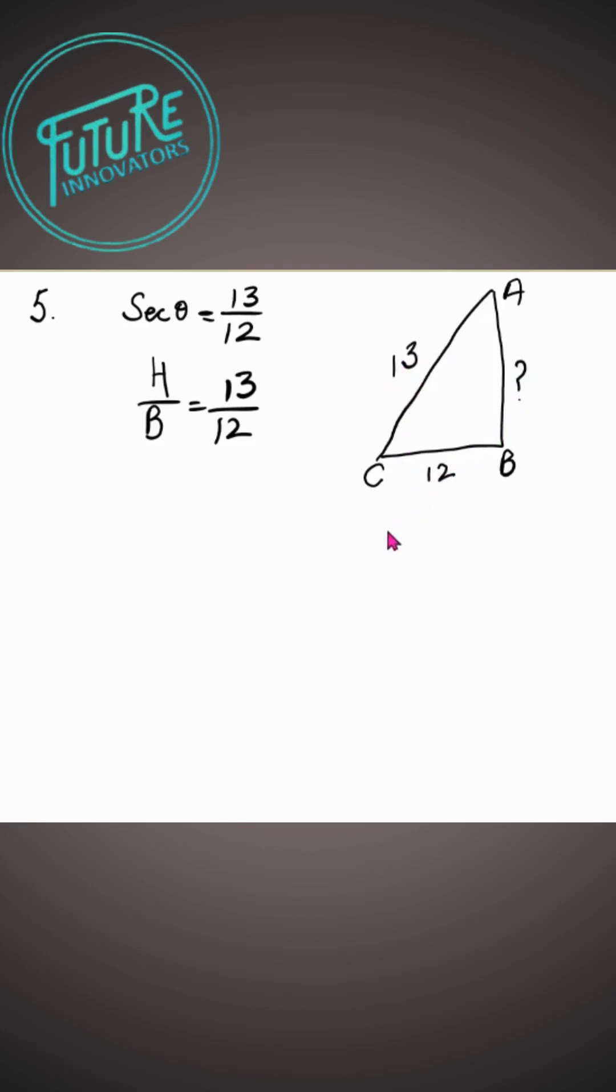We have to find out perpendicular. First of all, let us write Pythagoras theorem. AC square is equal to BC square plus AB square. Here AC is 13 square, BC is 12 square plus AB square. 13 square is 169 equals 144 plus AB square.